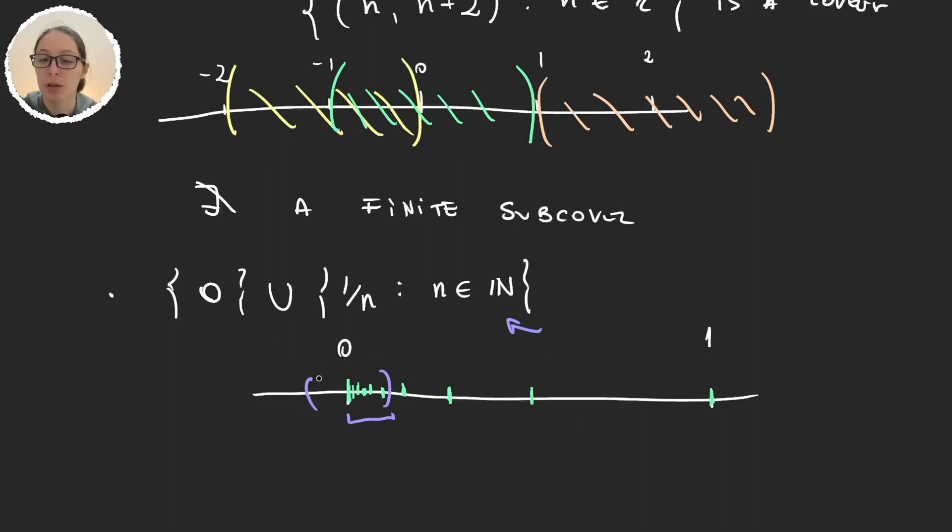And so given one interval that covers zero, this interval will cover all my set except for a few finite points. Now all I will need to do is cover each of these points individually.